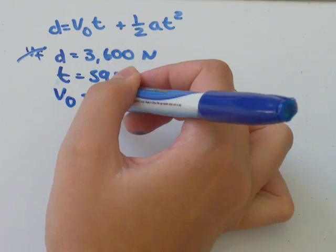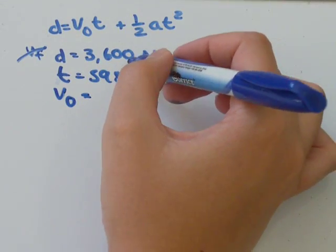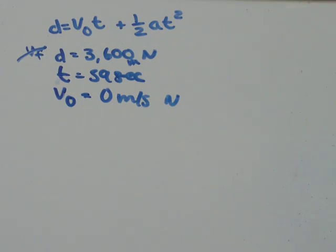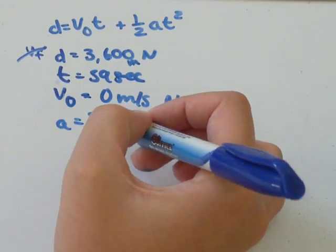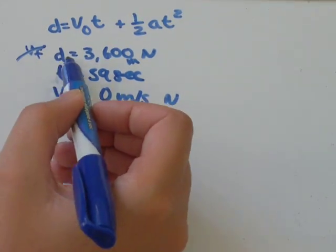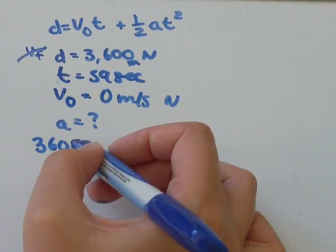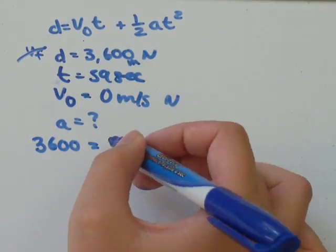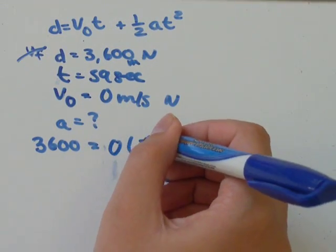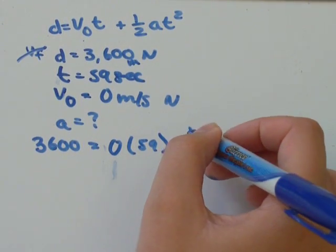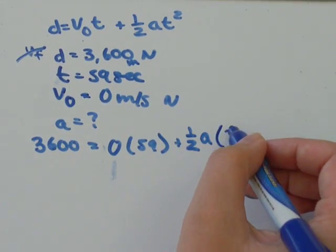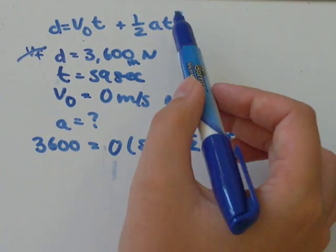So when it starts from rest, that means the initial velocity is 0 meters per second. We're asked to solve for a, so plug everything you know into the formula and solve for what you don't know. Displacement was 3,600 meters in the north direction. V0 is 0 times time, 59 seconds, plus 1 over 2, acceleration we don't know, and time is 59 seconds. And this time, time is squared.